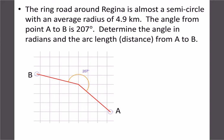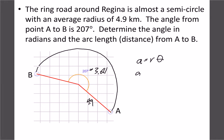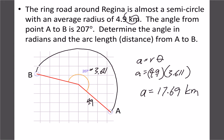Final arc length example: a road in Regina acts like a semicircle with an angle of 207 degrees and a radius of 4.9 kilometers. First convert 207 degrees to radians: 207 ÷ 180 × π = 3.611 radians. Then arc length = radius × angle = 4.9 × 3.611 = approximately 17.69 kilometers.